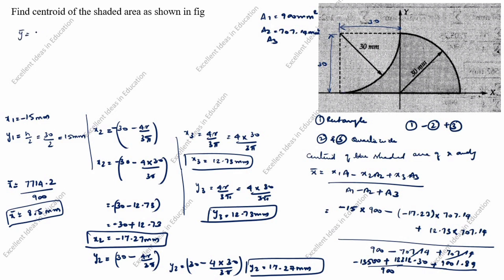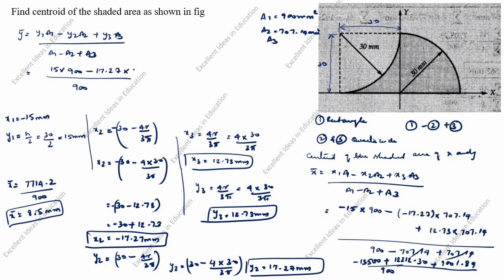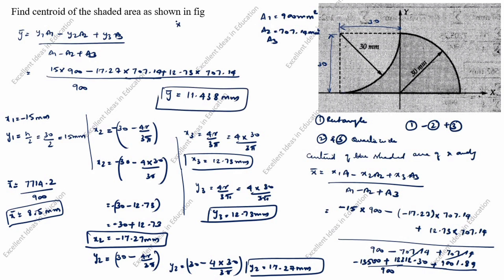Next we will find ȳ. The formula is ȳ = (y1·A1 − y2·A2 + y3·A3) / (A1 − A2 + A3). The denominator A1 − A2 + A3 = 900. So ȳ = (15×900 − 17.27×707.14 + 12.73×707.14) / 900 = 11.438 mm. The centroid of the shaded area is x̄ = 8.5 mm and ȳ = 11.438 mm.